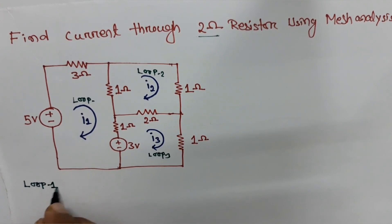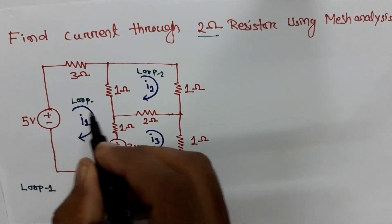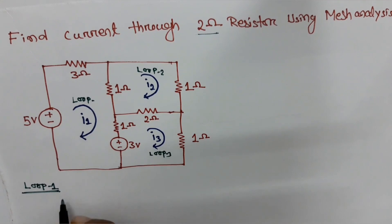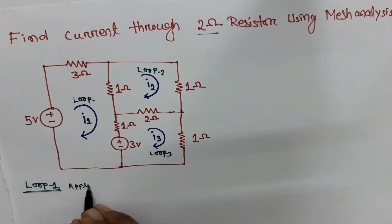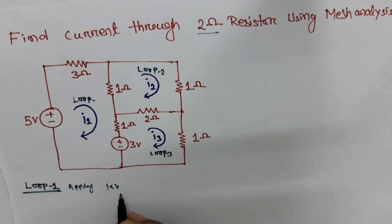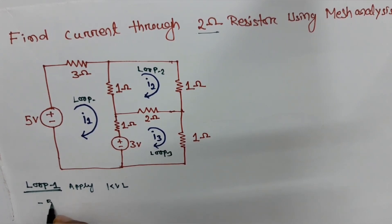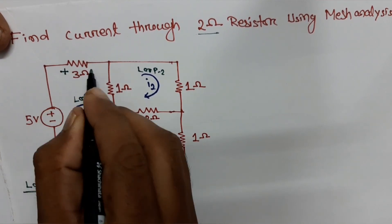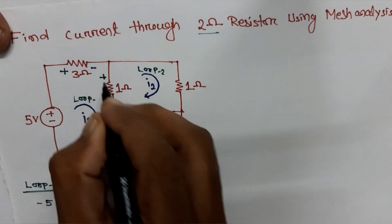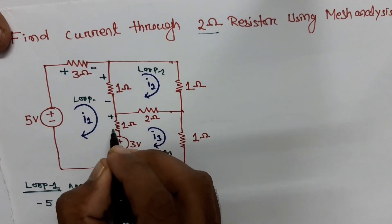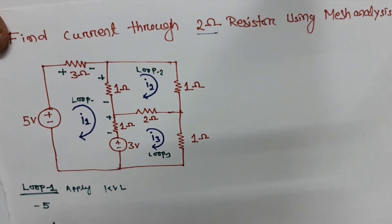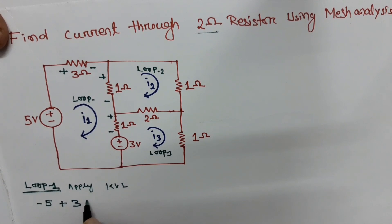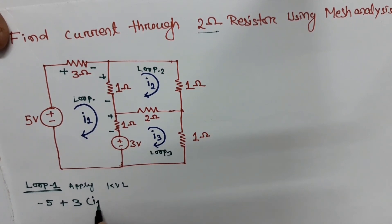For loop 1, let's assume the loop 1 current is circulating in the clockwise direction. Apply KVL. Mark the voltage polarity: this terminal is plus, this is minus; this is plus and minus; and this is also plus and minus. Then: minus 5 plus 3 times i1.